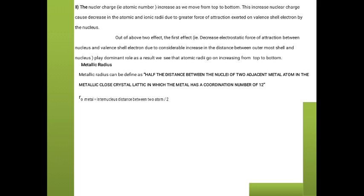The second type is metallic radius. Metallic radius is defined as half the distance between the nuclei of two adjacent metal atoms in a metallic closed-pack crystal lattice, in which the metal has coordination number 12. It is denoted as r₀, which equals the internuclear distance between two atoms divided by two.